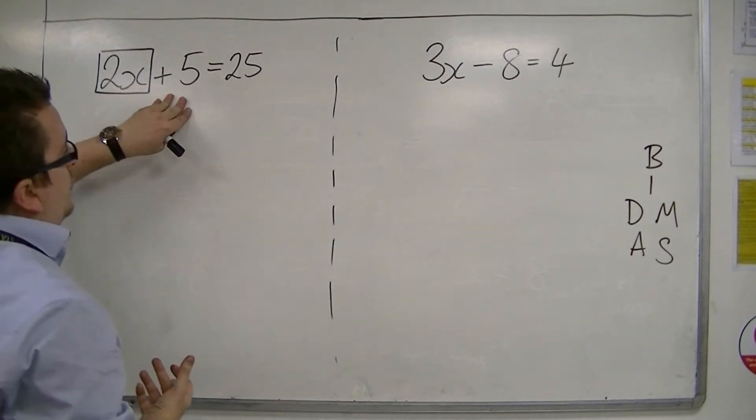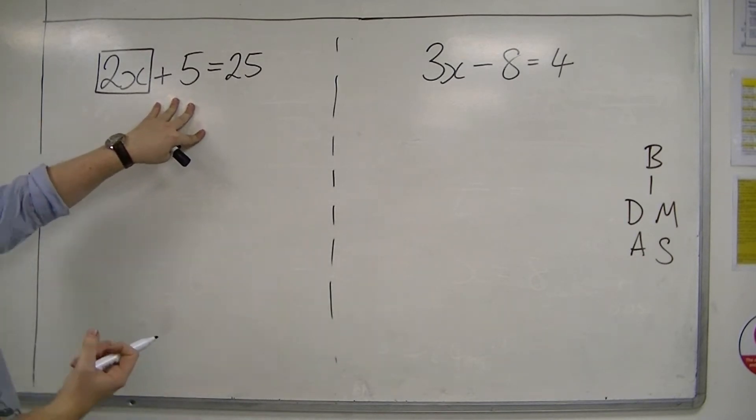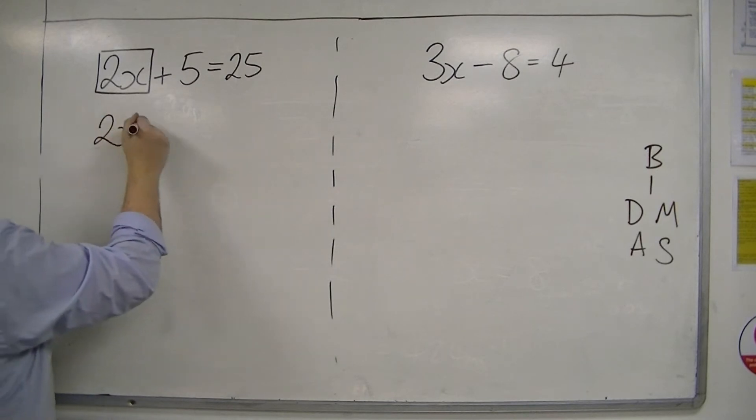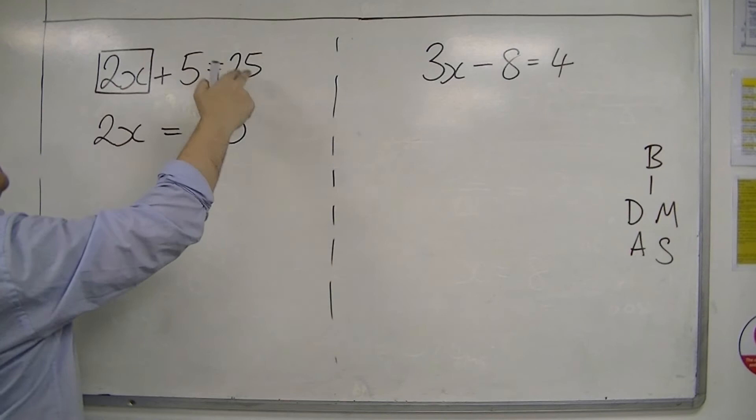Deal with the addition first and subtract that. Do the opposite. Subtract 5 from both sides so that you're left with 2x is 20, because 20 plus 5 is 25.